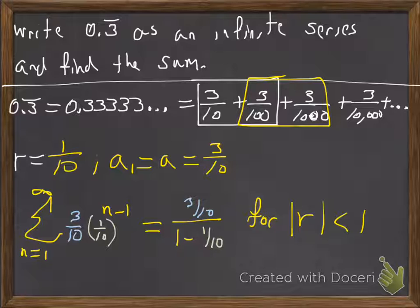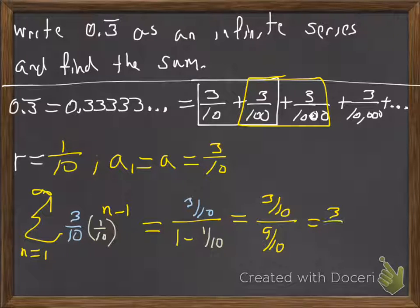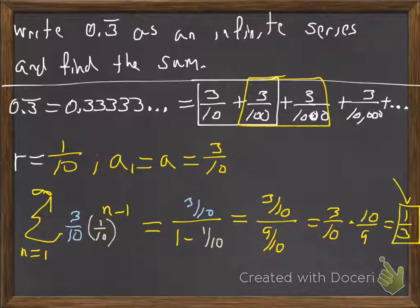Now it's just a matter of working it out. So we're going to have 3 over 10 divided by 1, not 1 anymore, 9 over 10. So we'll keep, flip, and change, and we get 1 third.